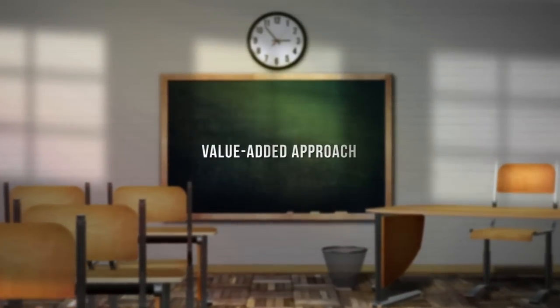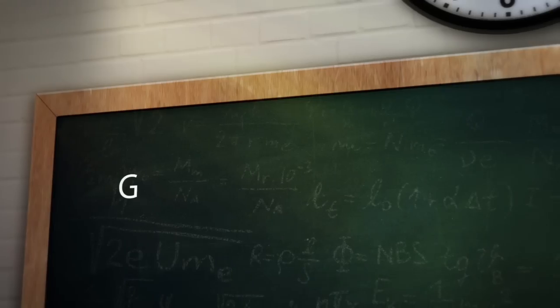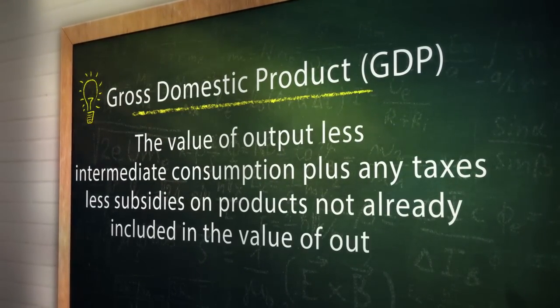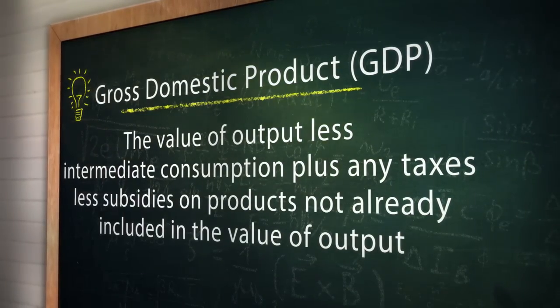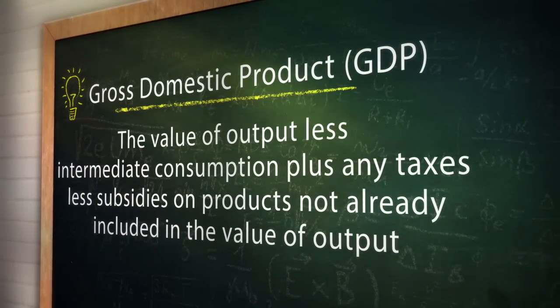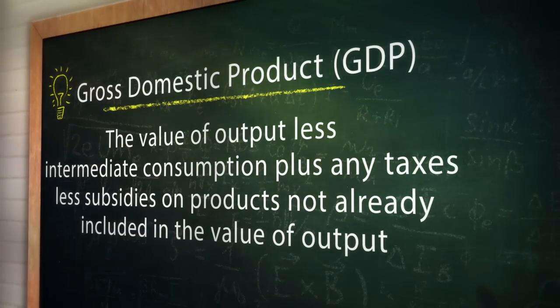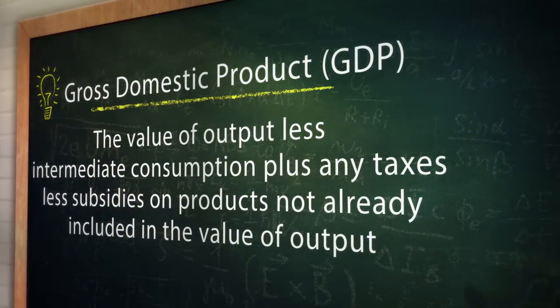Several methods are used to determine the GDP. One of the most direct methods is called the value-added approach. To explain it, let's start with our standard definition of GDP, which is the value of output, less intermediate consumption, plus any taxes less subsidies on products not already included in the value of output. You might find that definition a little hard to follow, so let's break it down with an example.